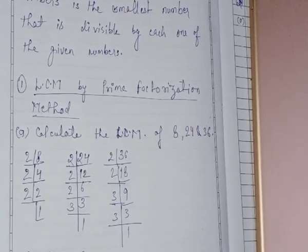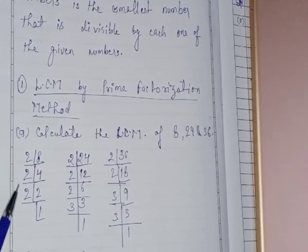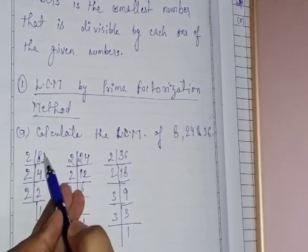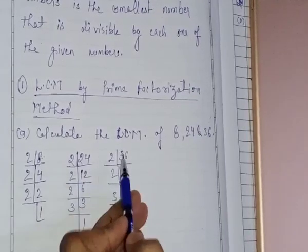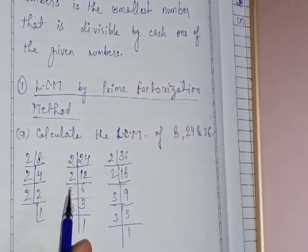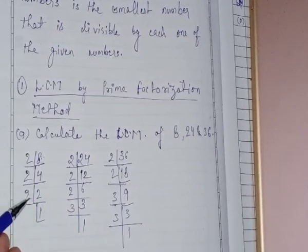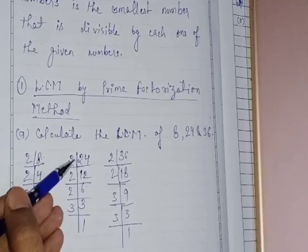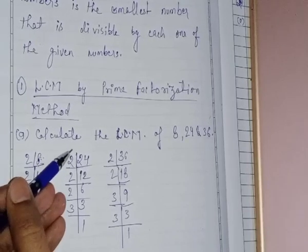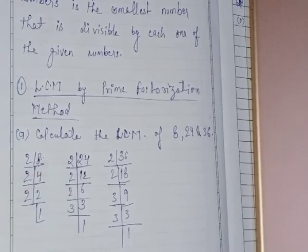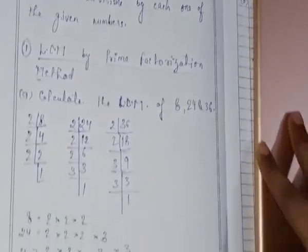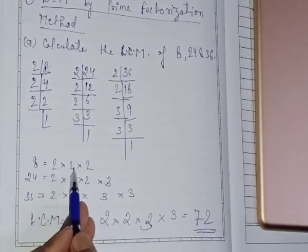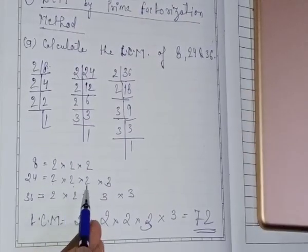When we get the factors of the numbers, you already know that the numbers 8, 24, and 36 are expressed as multiples of their prime factors. For example, 2 × 2 × 2 × 3 are the factors that make up 24. So you have already done this kind of factorization before.